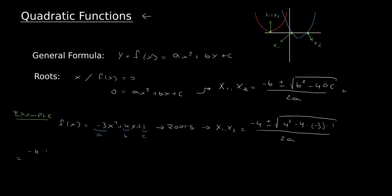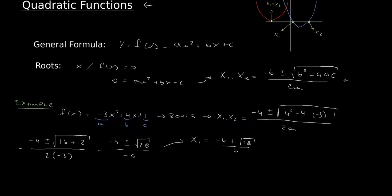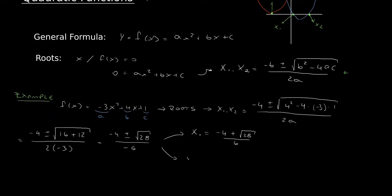This gives us minus 4 plus or minus the square root of 16 plus 12, divided by 2 times minus 3. This equals minus 4 plus or minus the square root of 28, divided by minus 6. So from here we get that x1 equals minus 4 plus the square root of 28, divided by minus 6. And x2 is minus 4 minus the square root of 28, all divided by minus 6.